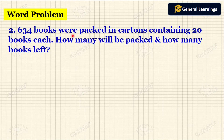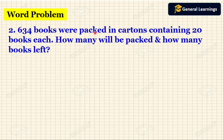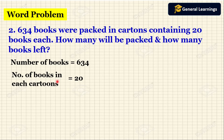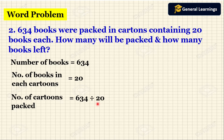Now we will see another example. Here they have given: 634 books were packed in cartons containing 20 books each. How many cartons will be packed, and how many books will be left? We write the statement: number of books is 634, number of books in each carton is 20. We need to find how many cartons are packed. So we divide: 634 divided by 20.